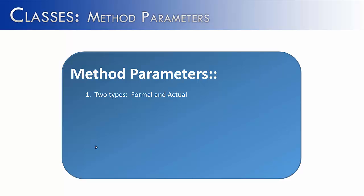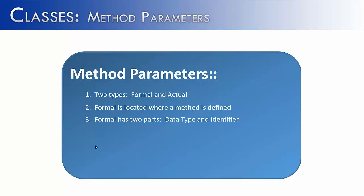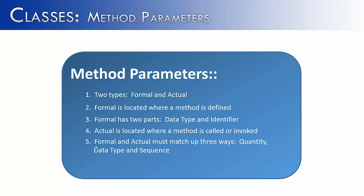Putting it all together: method parameters come in two forms — formal and actual. Formal parameters are located where a method is defined, and they have two parts: a data type, which must always be there, and an identifier. Actual parameters, or arguments, are located where a method is called or invoked. Formal and actual parameters must match up in three ways: quantity, data type, and sequence.